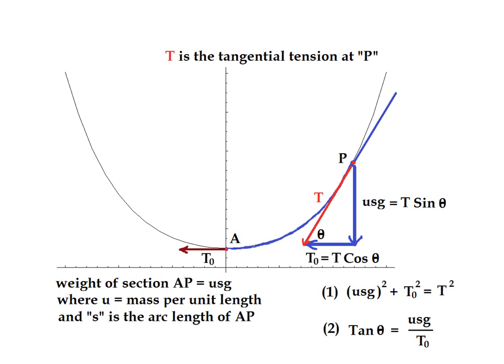We have the vertical component being T sine theta, is also given by U times S times G, where U is the mass per unit length of the chain, and S is the total length of the chain from point A to point P. Multiplying those two together will give you the total mass of the chain from point P to point A. And from our force equal MA formula that was presented at the beginning of this lesson, we have the force is equal to U times S, which is mass, times the acceleration due to gravity, which is G. That is T sine theta.